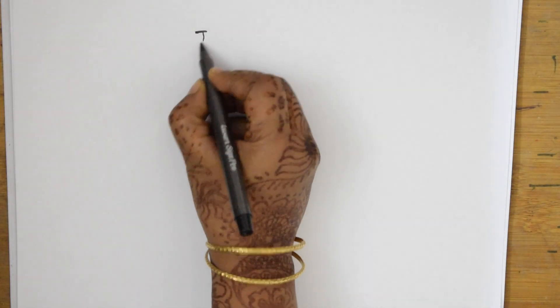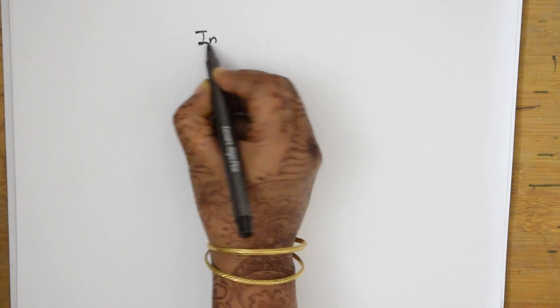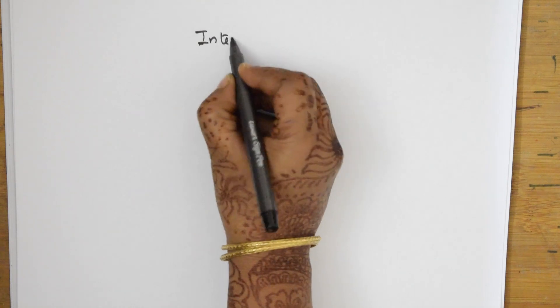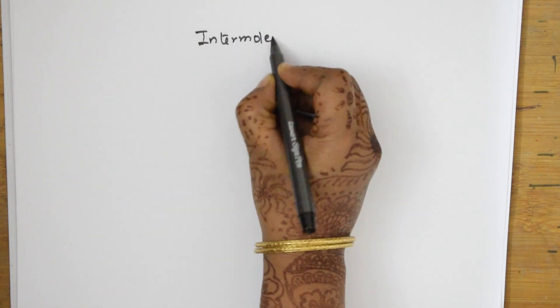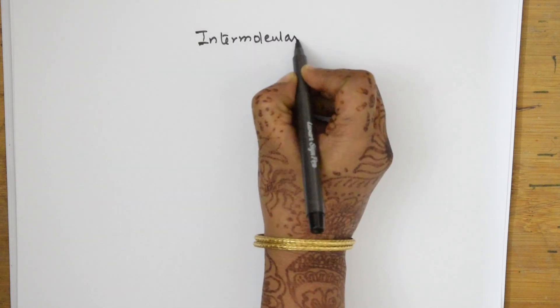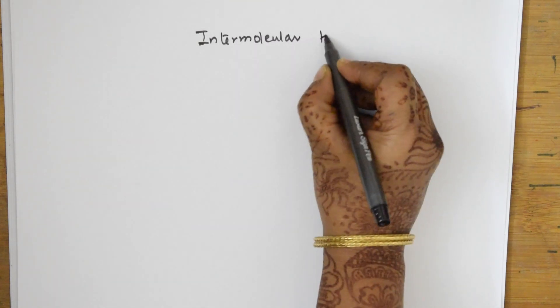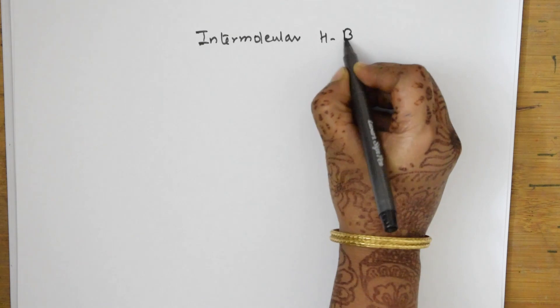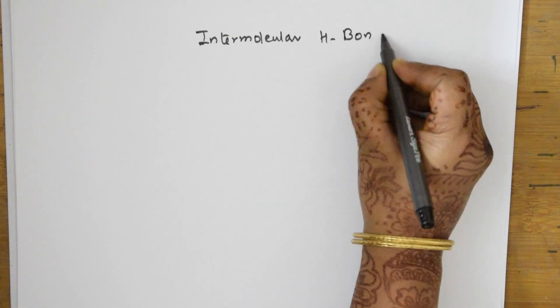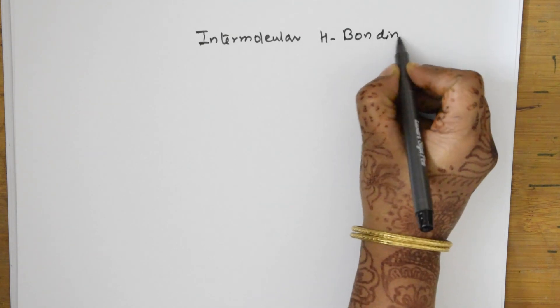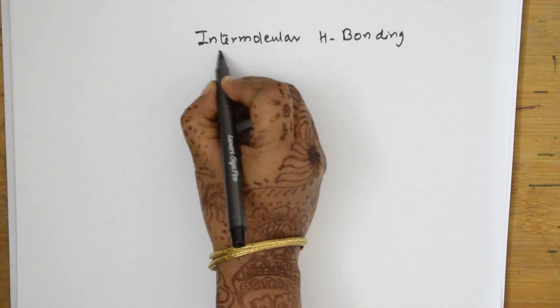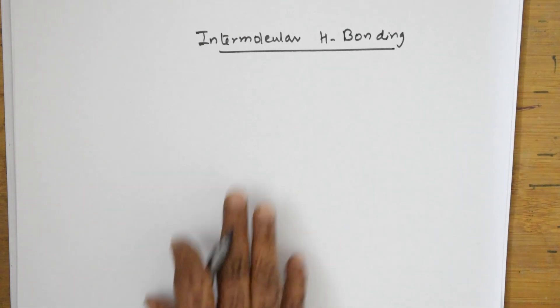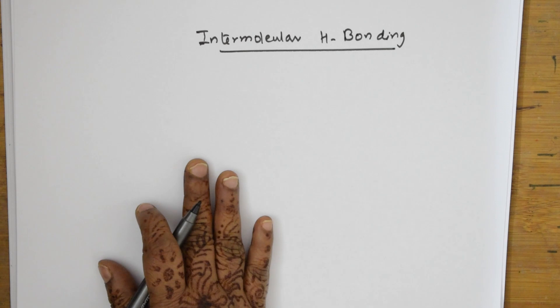Let us draw and understand. For intermolecular hydrogen bonding — that is, between two different molecules — let me write the heading: intermolecular H bonding. This means two different molecules. I have already given you the examples, so now let us see how to show it in the exam.